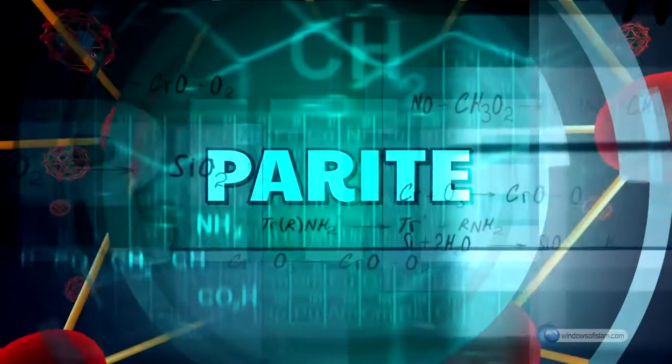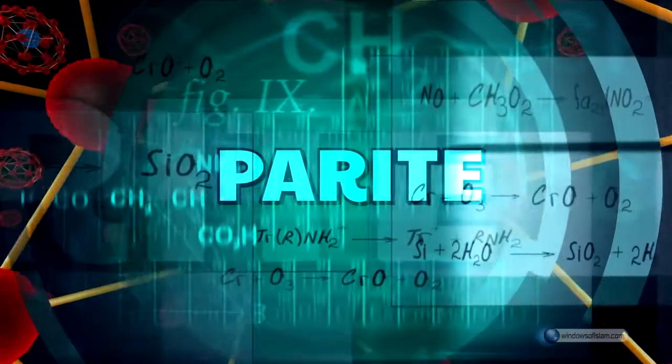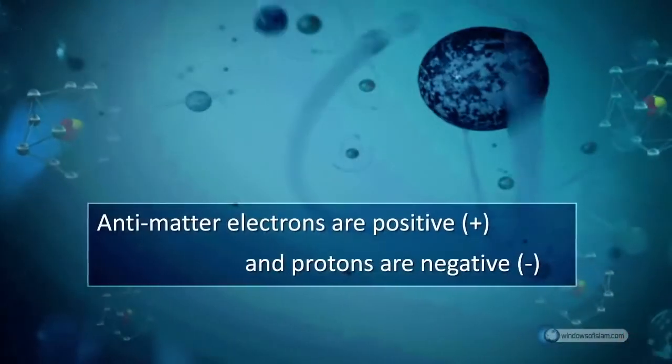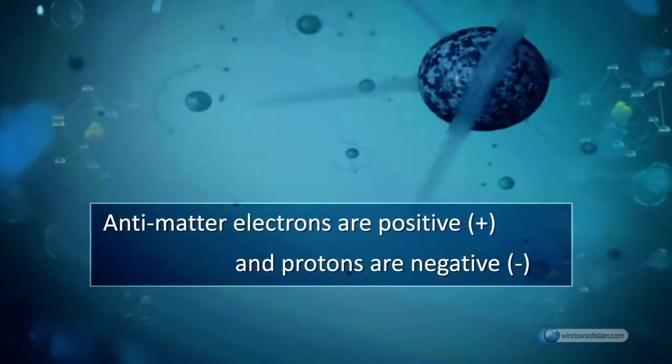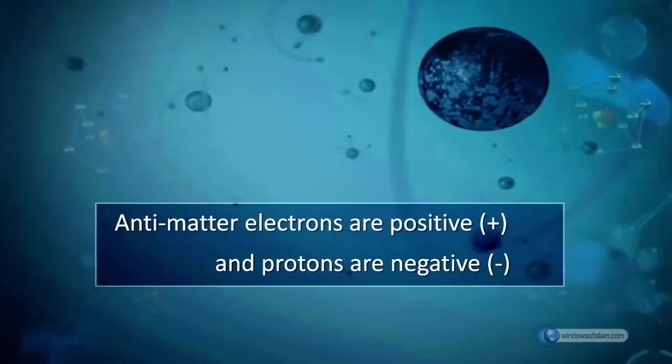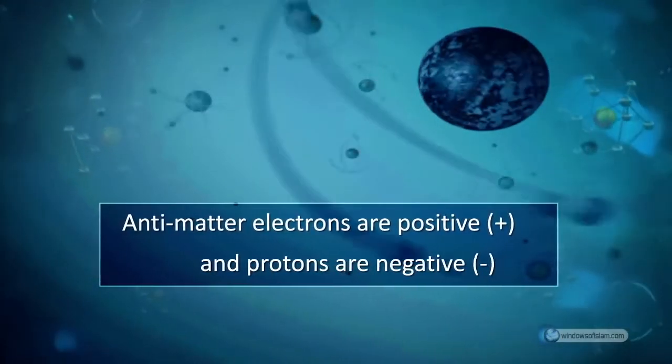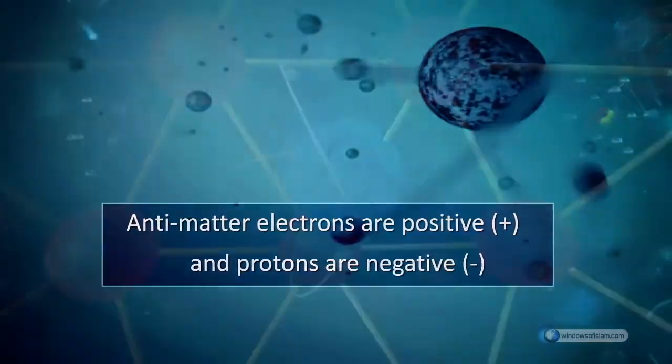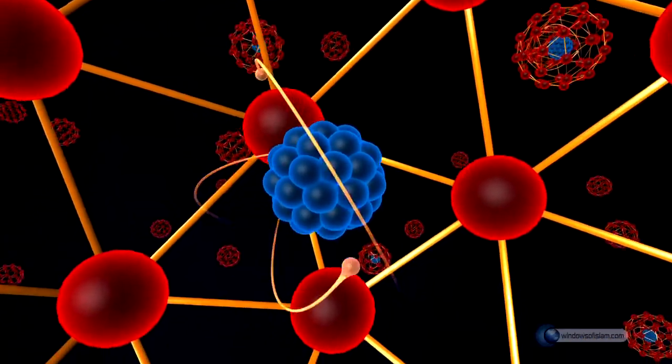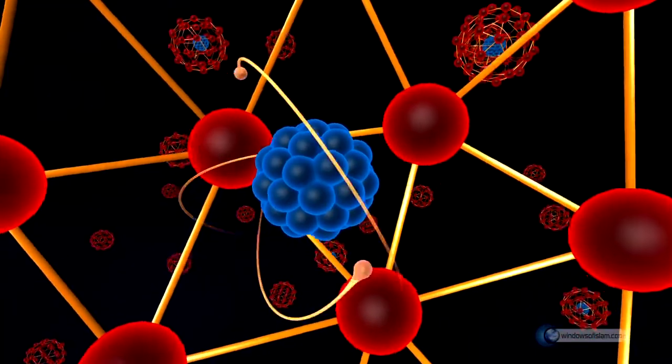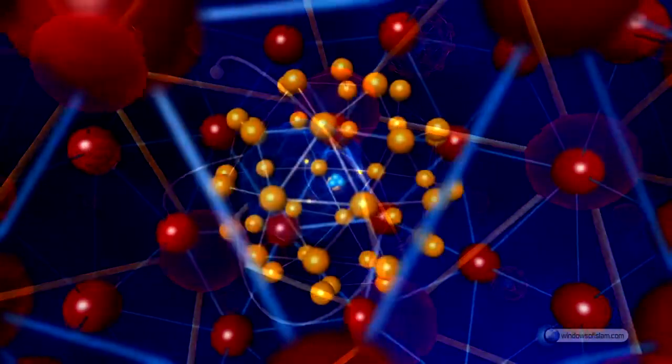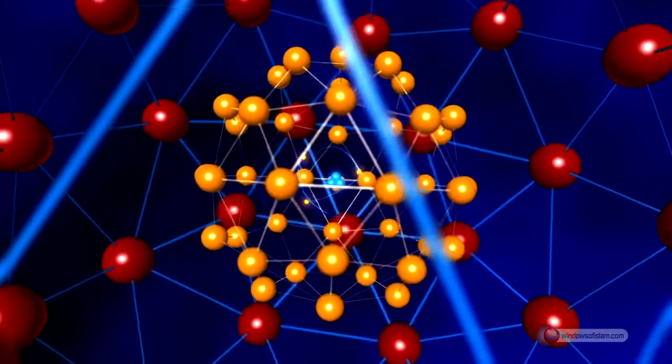Anti-matter bears the opposite characteristics of matter. For example, contrary to matter, anti-matter electrons are positive and protons are negative. This fact is expressed in a scientific source as follows: every particle has its anti-particle of opposite charge. The uncertainty relation tells us that the existence and non-existence of pairs forms simultaneously everywhere and at all times.